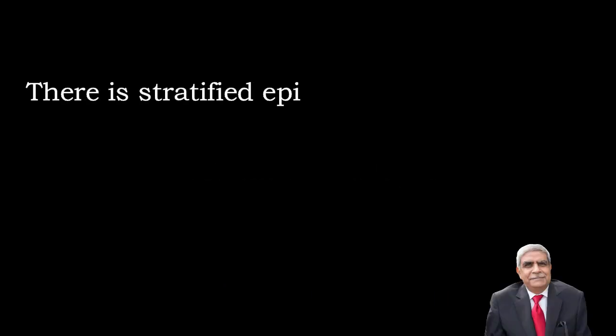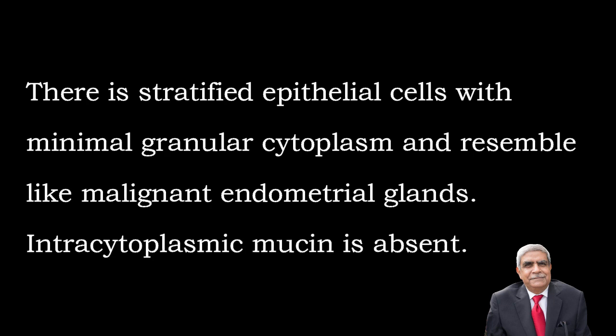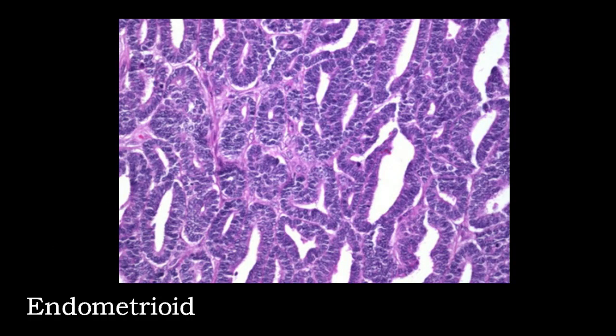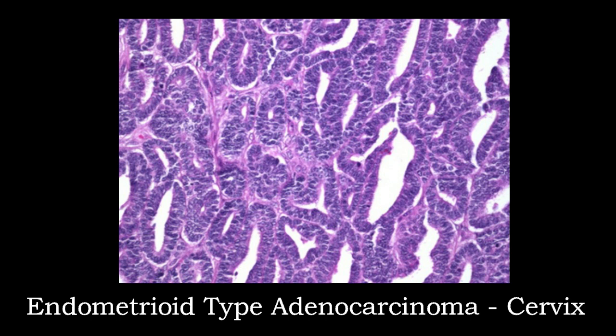The other subtype is the endometrioid type. There are stratified epithelial cells with minimal granular cytoplasm that resemble malignant endometrial glands. Intracytoplasmic mucin is absent. This photograph shows the endometrioid type of adenocarcinoma of the cervix. You can appreciate that the glands resemble endometrium and are lying back-to-back against each other.